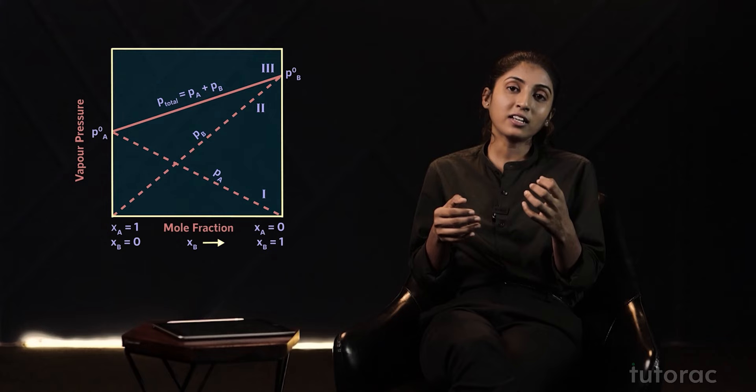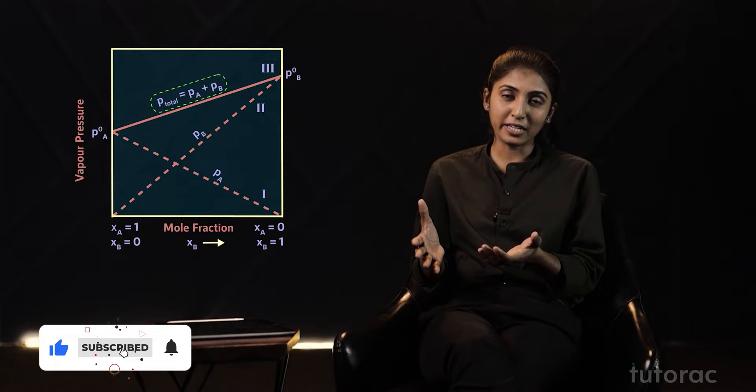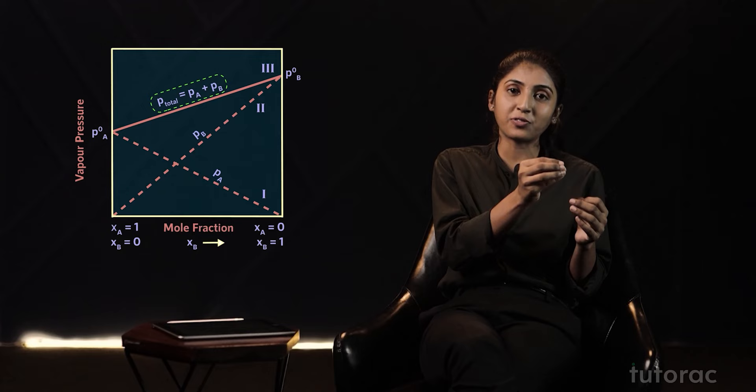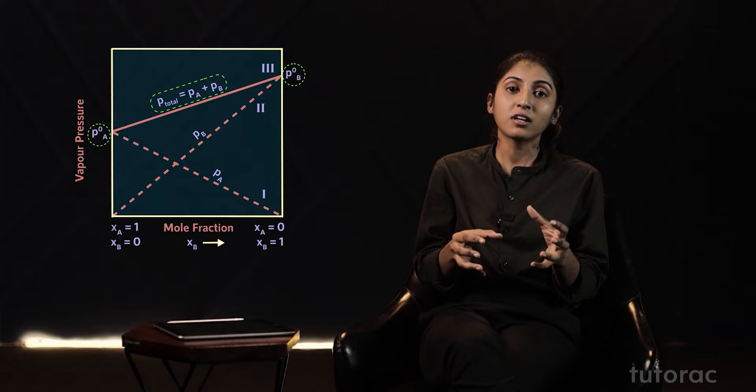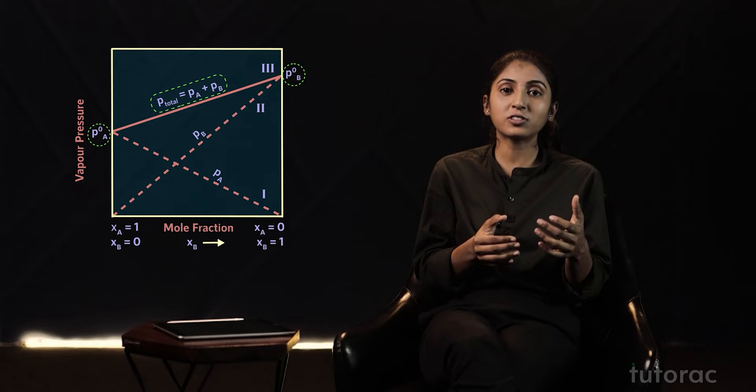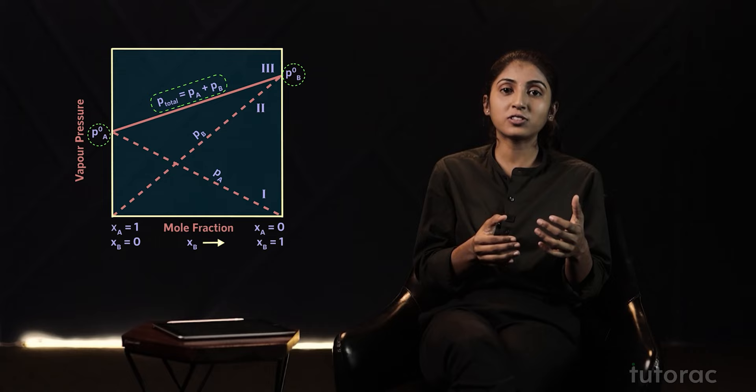When we plot the graph for total vapor pressure, which is P_A plus P_B, we find that it lies between P°_A and P°_B. That is, P_total always ranges between P°_A and P°_B. This completes the mole fraction versus partial pressure graph.